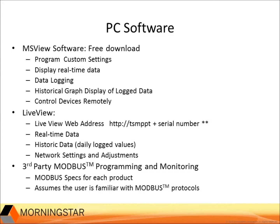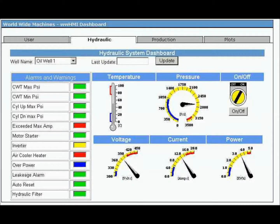Many users and customers have designed their own web interfaces. Some types of automated control systems can respond to data on a Modbus network. Anyone familiar with Modbus should be able to easily work with the Modbus specifications. There are several providers that can provide data acquisition services over the internet. This example from WWMachines is the kind of online service available.